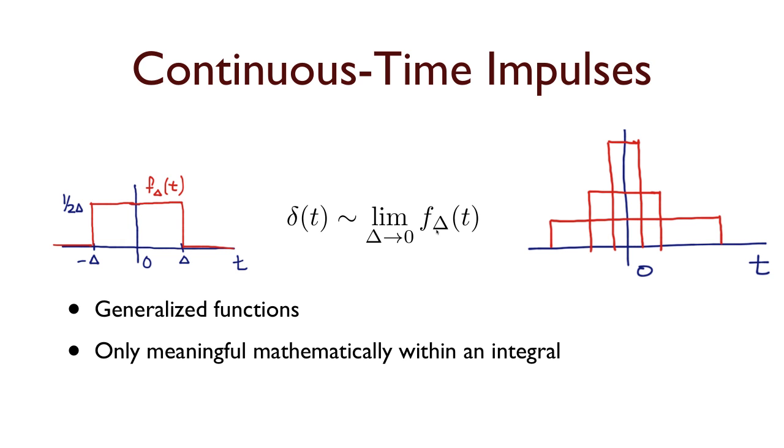Now, a mathematician would only write the impulse function in continuous time underneath an integral sign, because that's really the only place it's truly meaningful, as engineers oftentimes we're not quite so precise in how we use them, and usually that works out fine. Now, one very important property of the continuous time impulse is the so-called sifting property. That is, if I integrate some function f(t) against an impulse, which is located at t0, so in this case the impulse is going to be on at time t0, and it's zero everywhere else. If I integrate this product, I pick out the value of the function at t0.